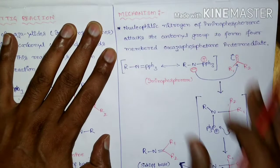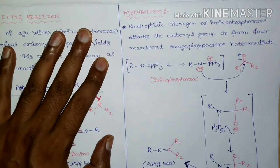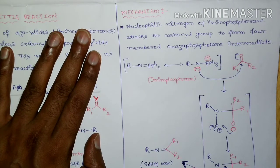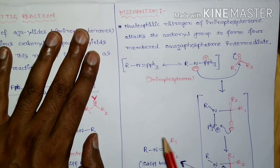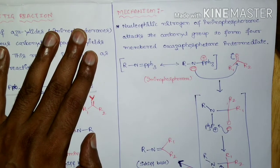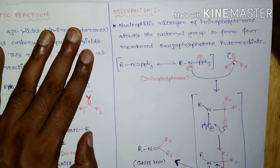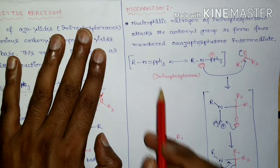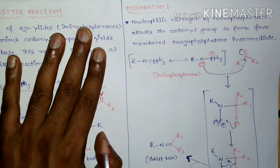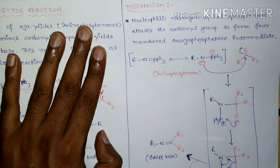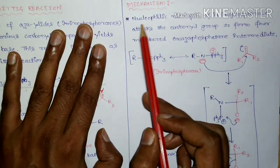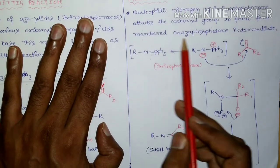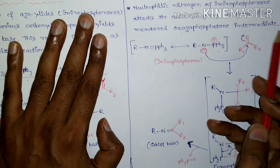For the mechanism of the Aza-Wittig reaction — up to the formation of the iminophosphorane, we have already studied the mechanism in the Staudinger reaction. Now we will see how this iminophosphorane reacts with the carbonyl compound. Iminophosphoranes are resonance-stabilized, and there are two resonance structures. In the first step of the Aza-Wittig reaction, the nucleophilic nitrogen of the iminophosphorane attacks the carbonyl group to form a four-membered oxazaphosphetine intermediate.